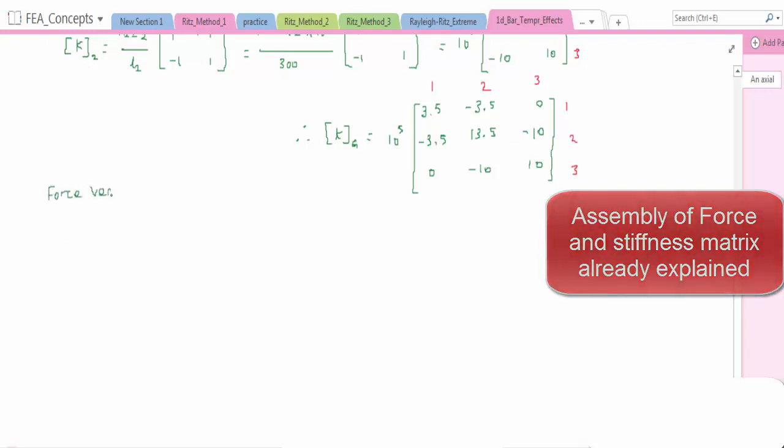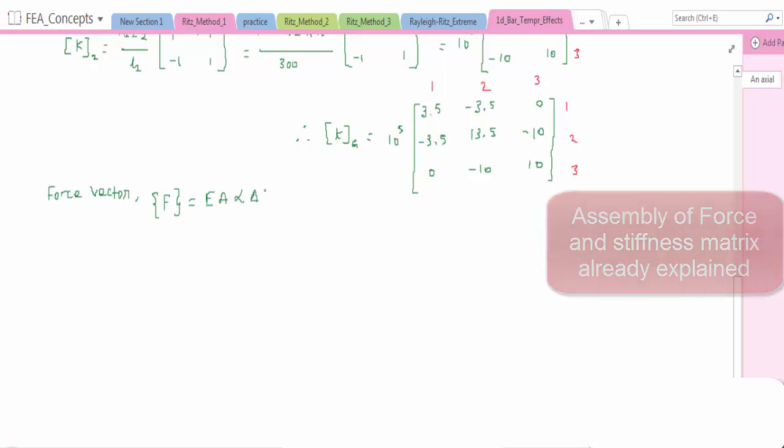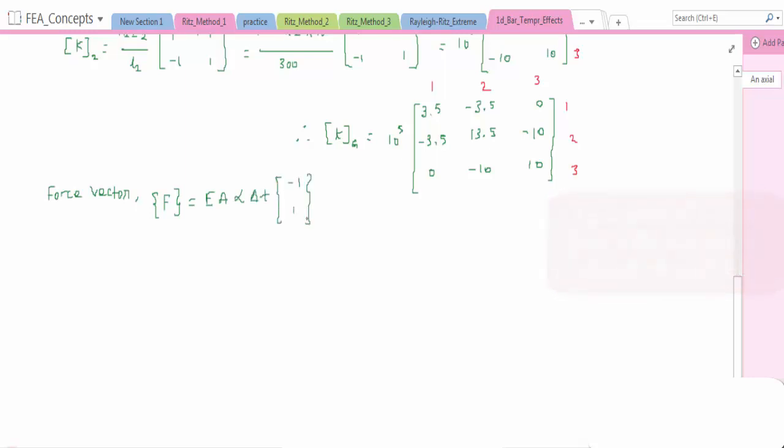Now force matrix, force vector. We have a formula of E A alpha delta T [-1; 1]. This is the formula for calculating the force vector.